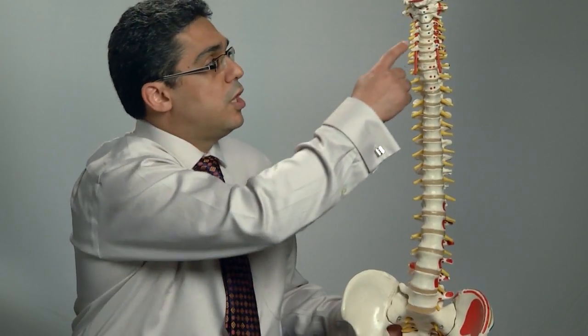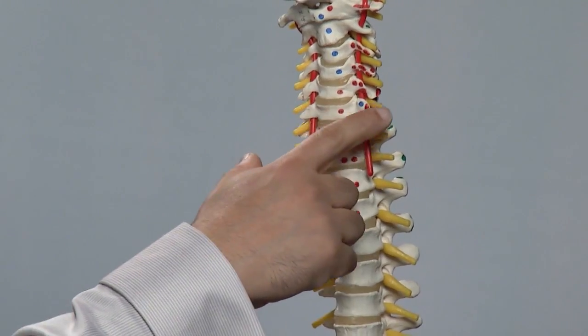If a disc herniation occurs on the side, either on the right or the left, it can cause arm symptoms on that particular side.